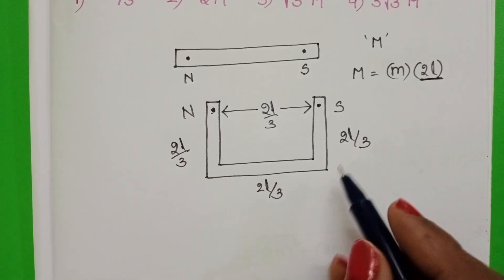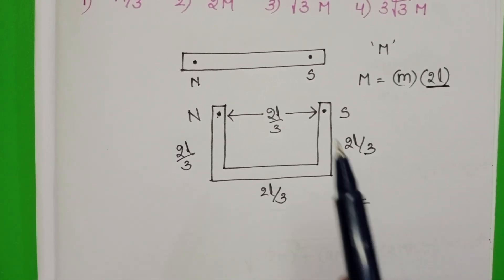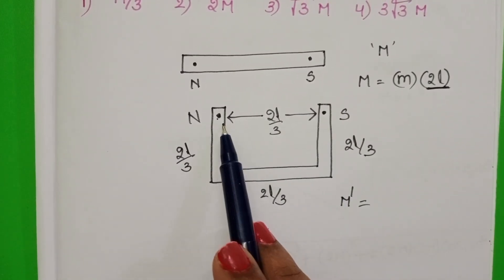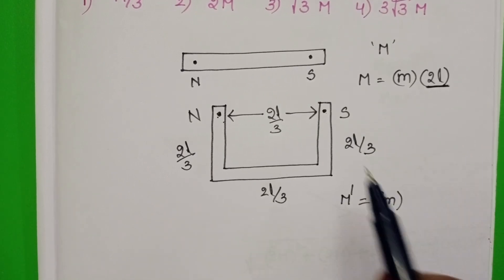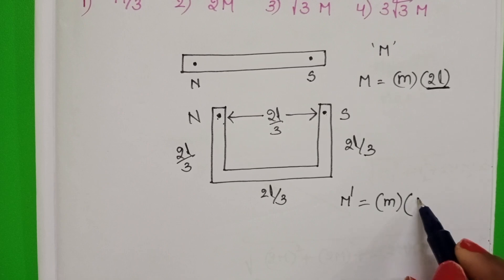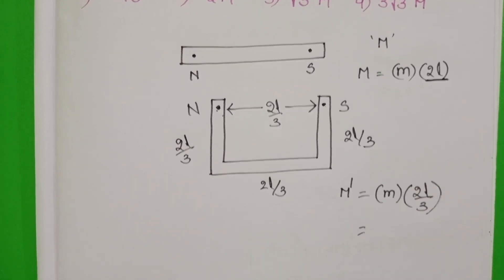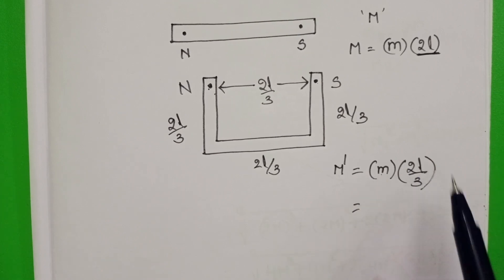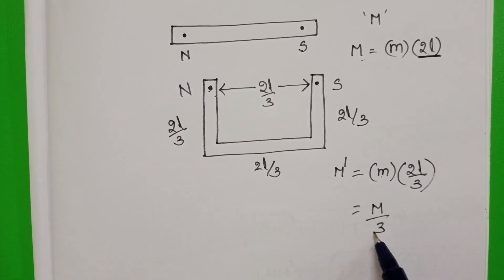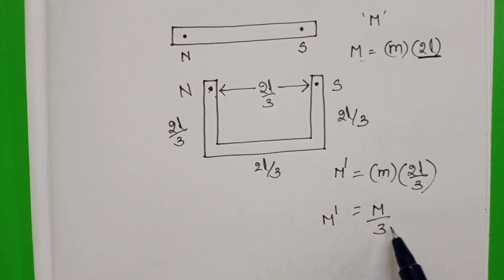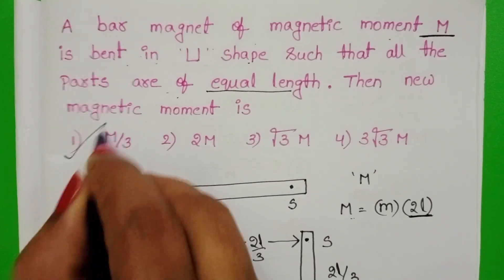Now the new magnetic moment equals pole strength times magnetic length. There is no change in the pole strength — pole strength remains constant at M — and the new length of the magnet is 2L/3. Substituting in place of M into 2L, we get M/3. So the new magnetic moment is M/3. The first option is correct.